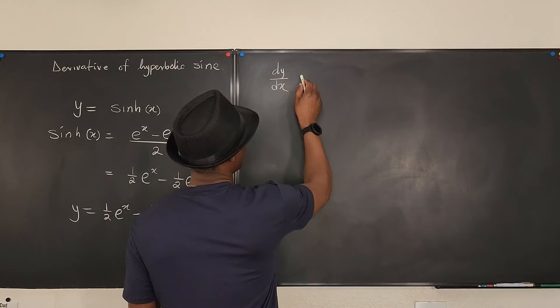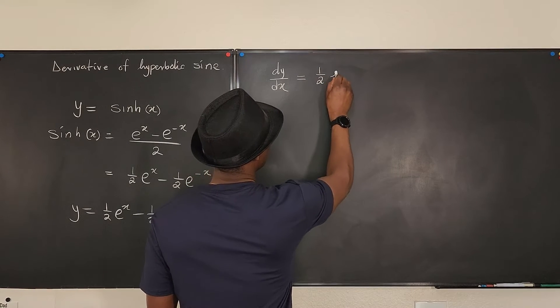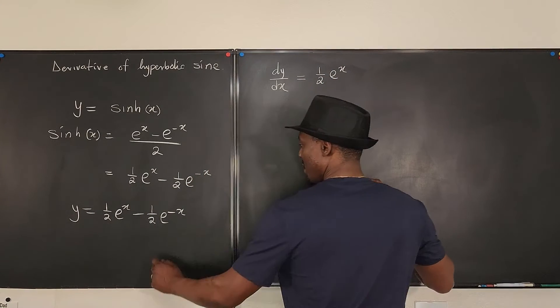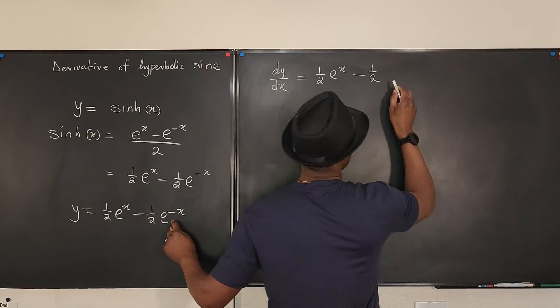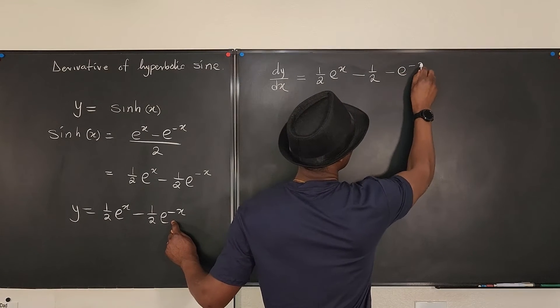get e to the x. So this is equal to one half e to the x. If you differentiate this, this is minus one half. Now if you differentiate this, you're going to get minus e to the negative x.